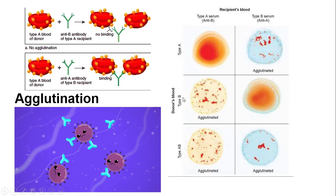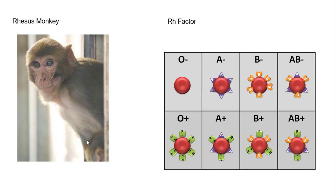You can't give your blood to them because they would agglutinate. These antibodies would attach to the cells and that would cause clots, and that's super duper dangerous.